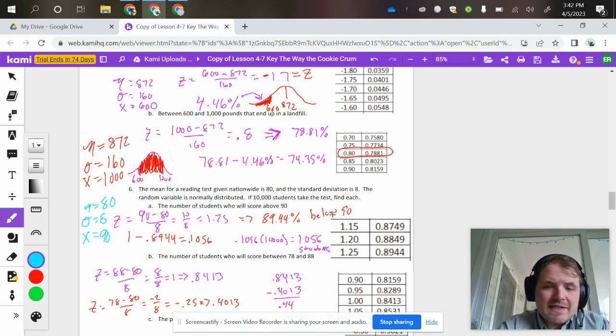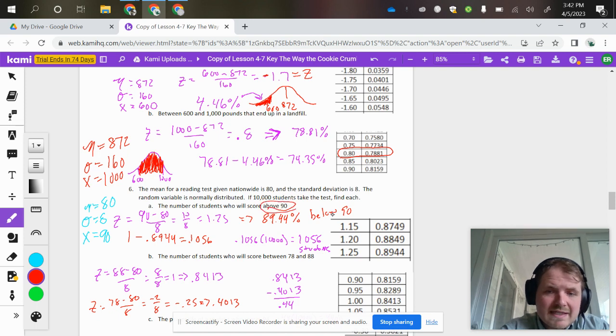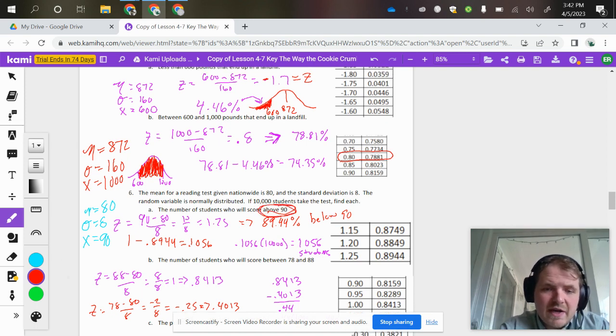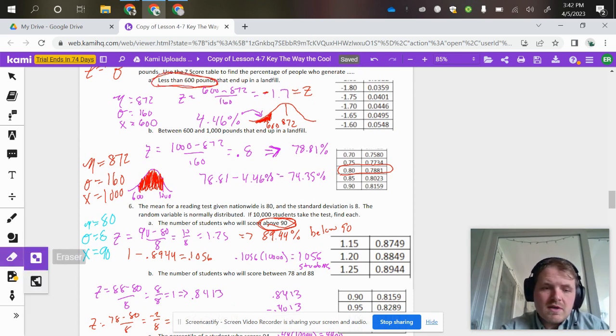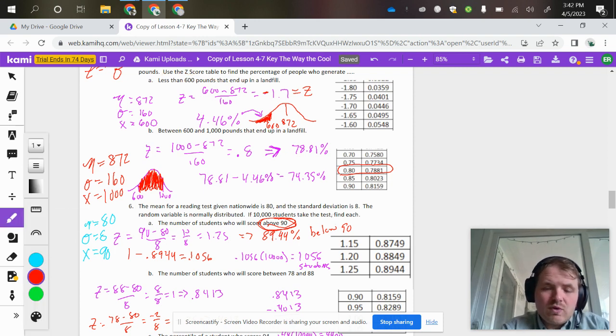The thing to pay attention to is that this says above 90, whereas part A from before was less than 600. That is the default situation. When it's less than, that's default; when it's greater than or above, that is not the default situation.